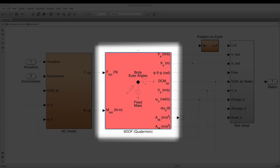The forces and torques are then fed into the 6DOF model. This is a rigid body model that comes with the aerospace block set. And this is an example of using an existing model rather than going through the effort of writing out the equations of motion for a rigid body yourself.